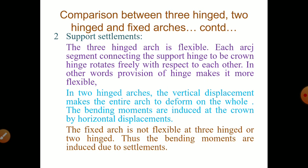In case of two-hinged arches, the vertical displacement makes the entire arch deform on the whole. The bending moments are induced at the crown by horizontal displacement. Whereas bending moment at the crown in case of three-hinged arch is zero. Fixed arch is not flexible as three-hinged or two-hinged. Thus, the bending moments are induced due to settlements.